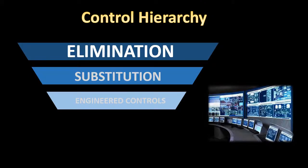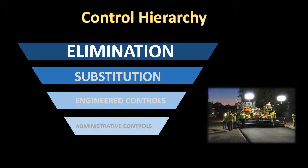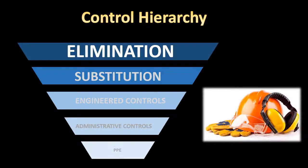Below these are administrative controls. Administrative controls change the way in which people go about the task through procedures and signage. Performing road work at night, where possible, is a policy aimed at minimising road safety incidents. The least effective control method is the use of personal protective equipment, which includes equipment such as hardhats, respirators, and safety glasses.